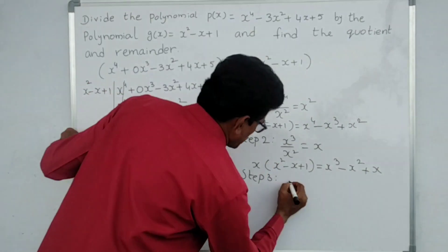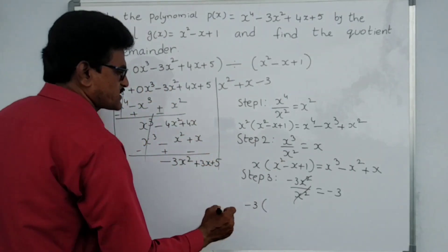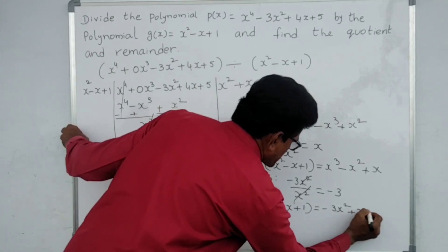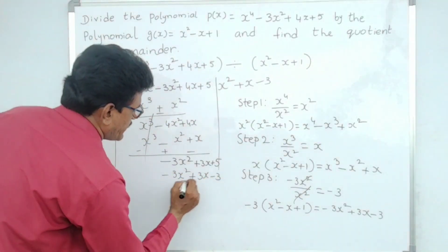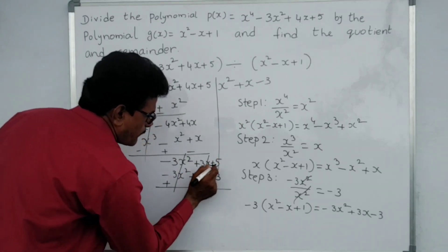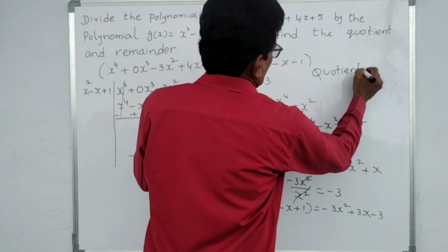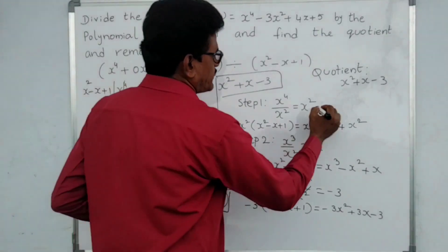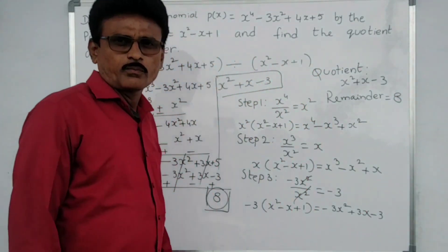Step three: minus 3x² divided by x² gives minus 3. Write minus 3. Minus 3 into (x² minus x plus 1): minus 3x² plus 3x minus 3. Do subtraction — change symbols plus, minus, plus — first term cancels; plus 3x minus 3x also cancels; plus 5 plus 3 gives 8 as the remainder. So the quotient is x² plus x minus 3 and the remainder is 8.